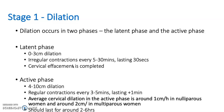In the active phase, the cervix is between four and ten centimetres dilated. There are regular contractions every three to five minutes, lasting around a minute or longer. The average dilation rate in the active phase is around one centimetre per hour in nulliparous women and around two centimetres per hour in multiparous women. This phase of labour should last between two and six hours.